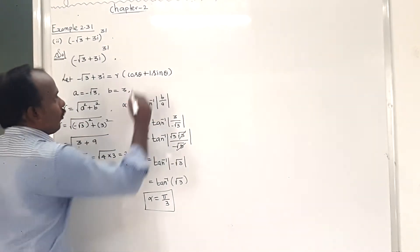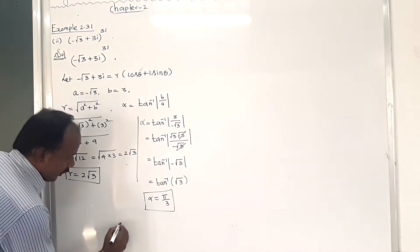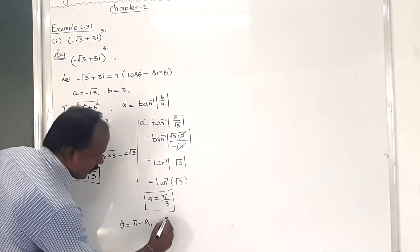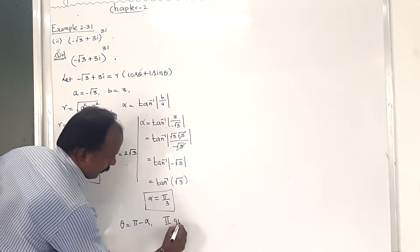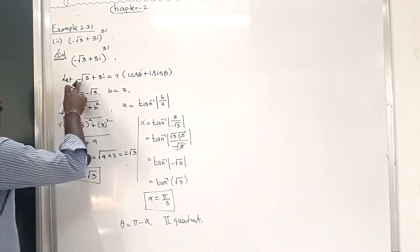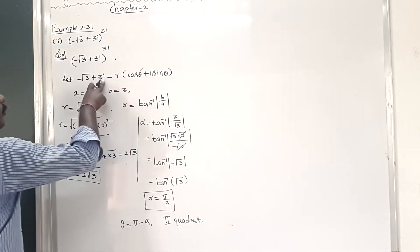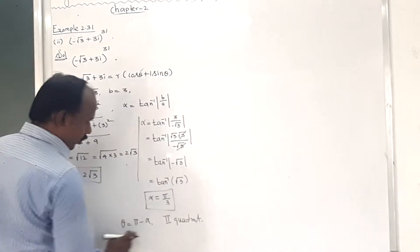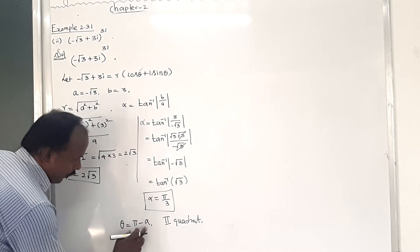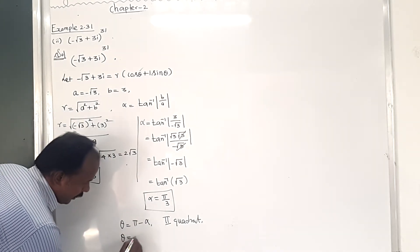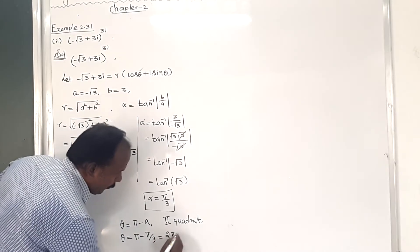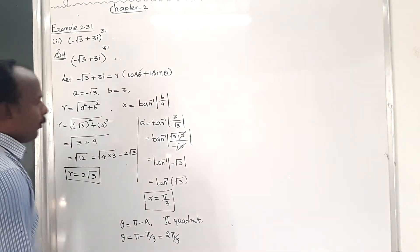Next, to find the value of theta. Theta = π − alpha, because this is in the second quadrant — the real part is minus and the imaginary part is plus. Using the second quadrant formula, theta = π − π/3 = 2π/3.